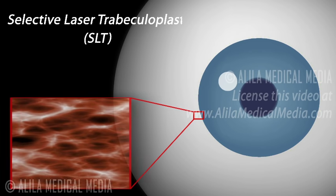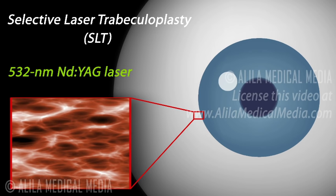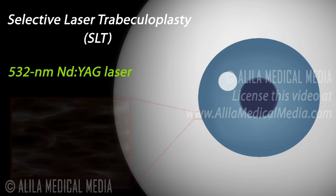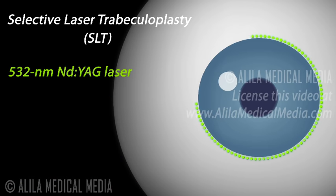The newer technique, Selective Laser Trabeculoplasty or SLT, uses a solid-state laser of 532 nm wavelength. The pulse energy of SLT is about 100 times lower than the traditional argon laser trabeculoplasty. SLT selectively targets pigmented cells while leaving the rest of the trabecular meshwork tissue intact. For this reason, it can be applied to 360 degrees of the meshwork in one treatment and is considered safe to be repeated.